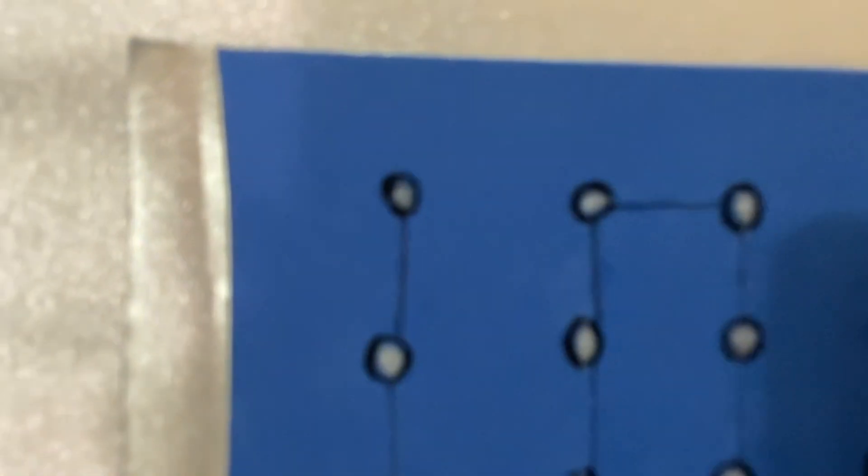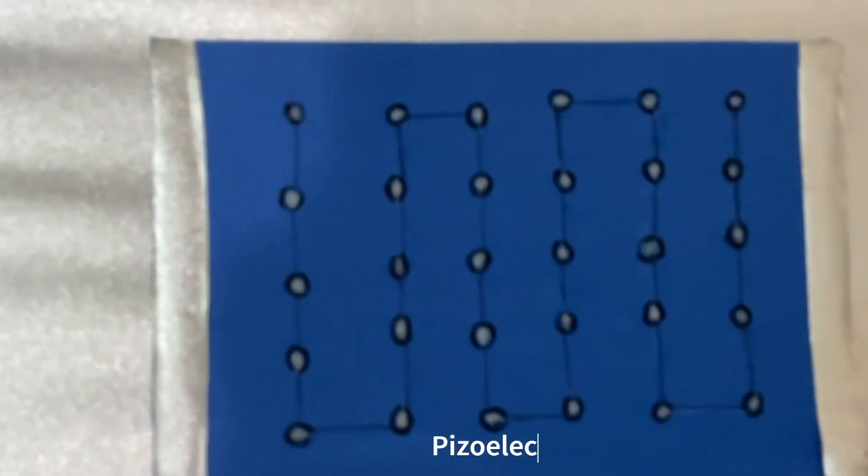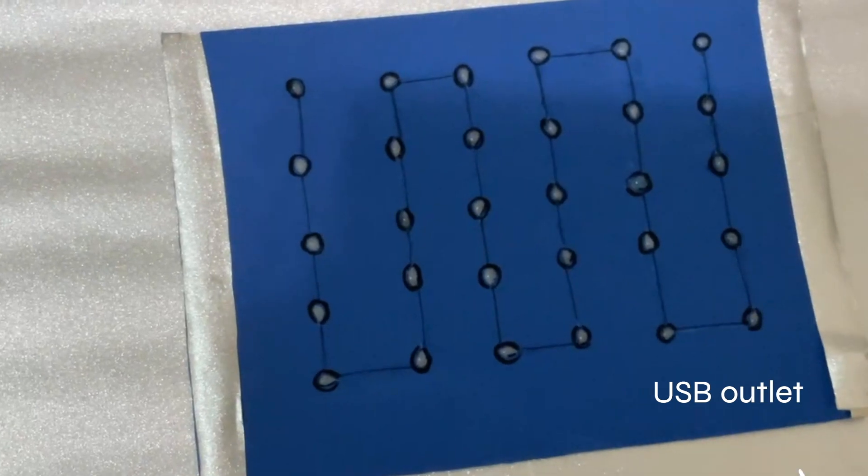So how does it work? Our rubber mats are fitted with cost-effective piezoelectric ceramic sensors, a battery, and a USB port as an outlet.